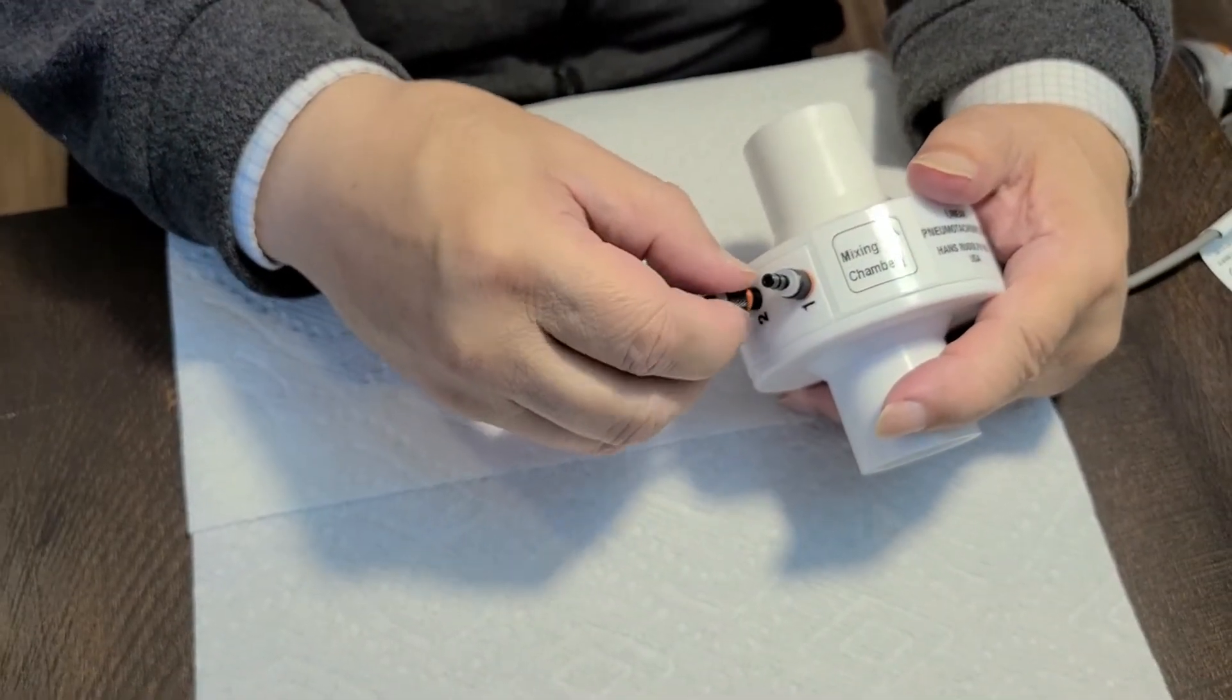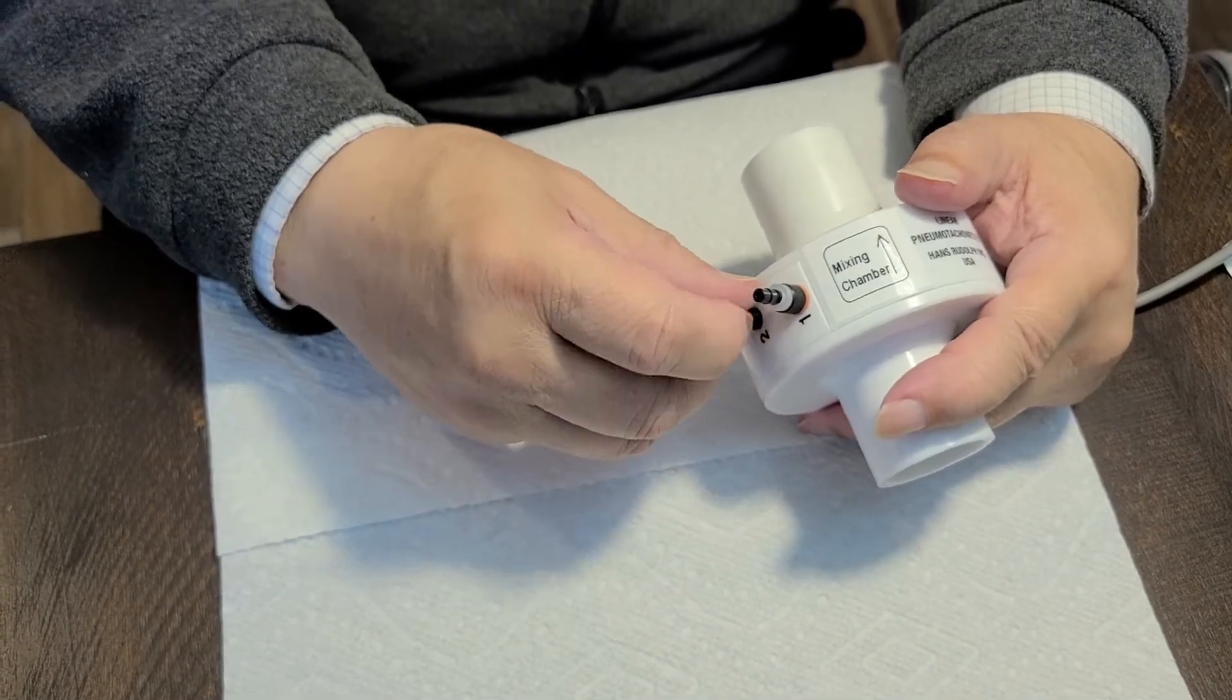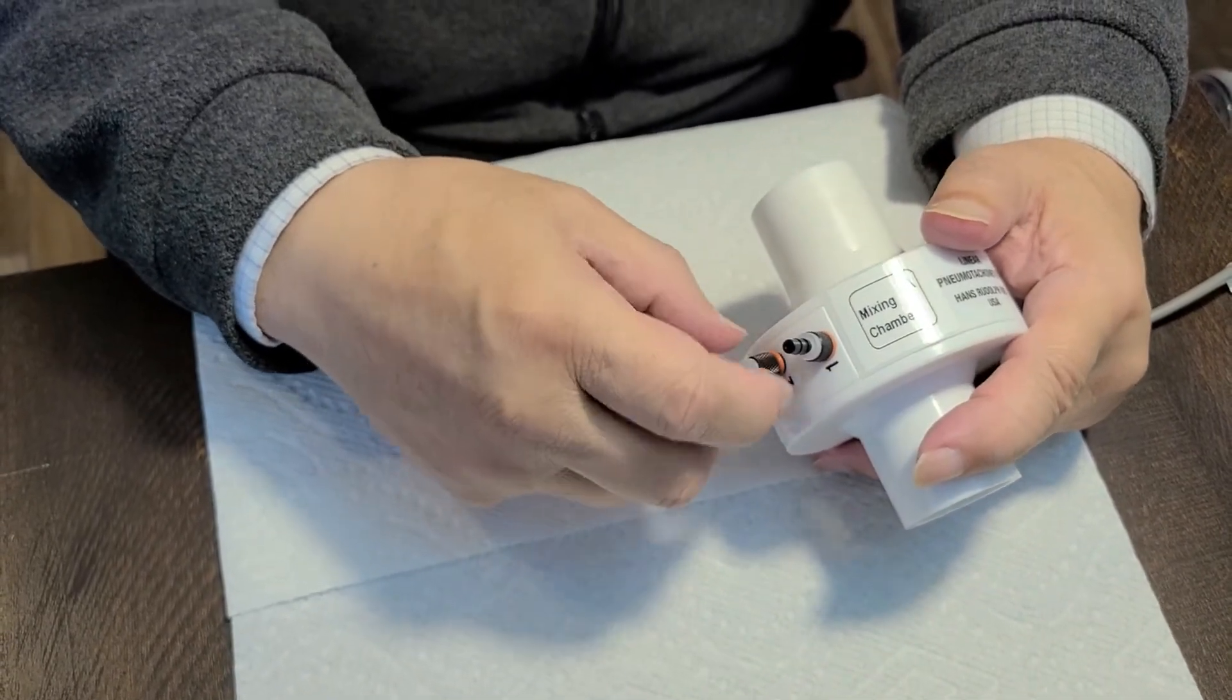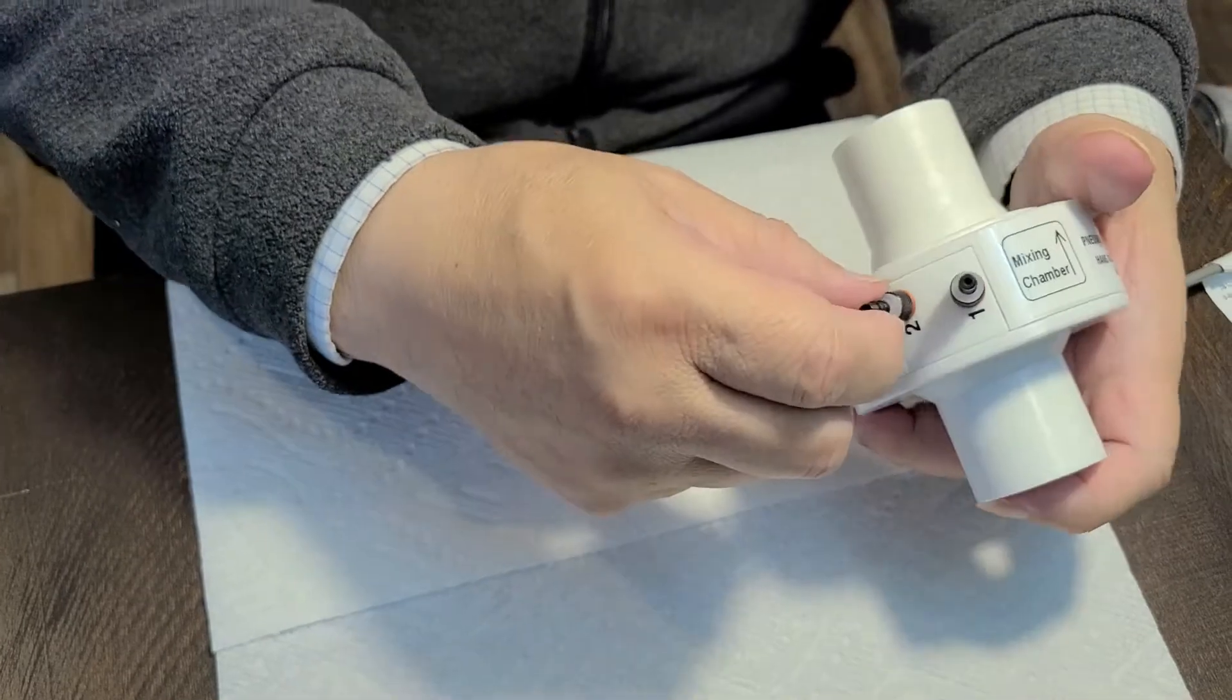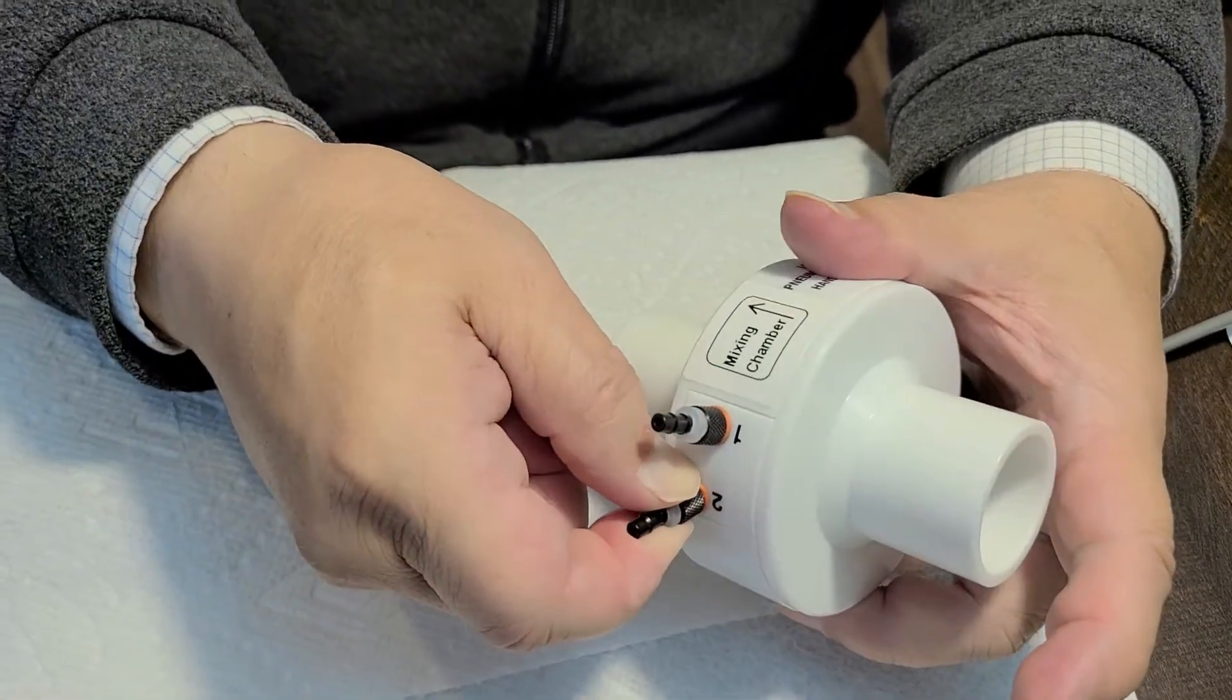And then the other black connector. Again, touch the orange o-ring. Turn about 90 degrees.